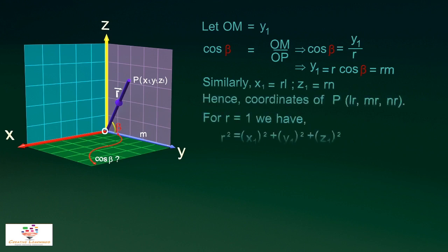With the help of some simple mathematical operations, one can find out the sum of squares of all three direction cosines always remain one.